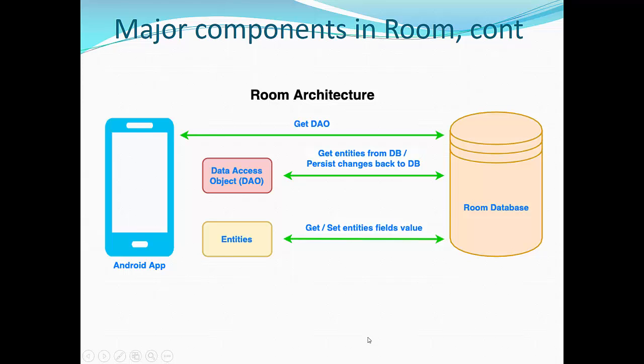So this is a diagram for major components in Room. You see Room database that has connection with entity components using get/set entity field values. Data access object is responsible for getting entities from database and for persisting changes back to database, both ways. Using DAO, your Android application communicates directly with Room database. Room database is nothing but just another abstraction layer on top of SQLite. There are no changes at the low level. You still have the same database structure at the low level.